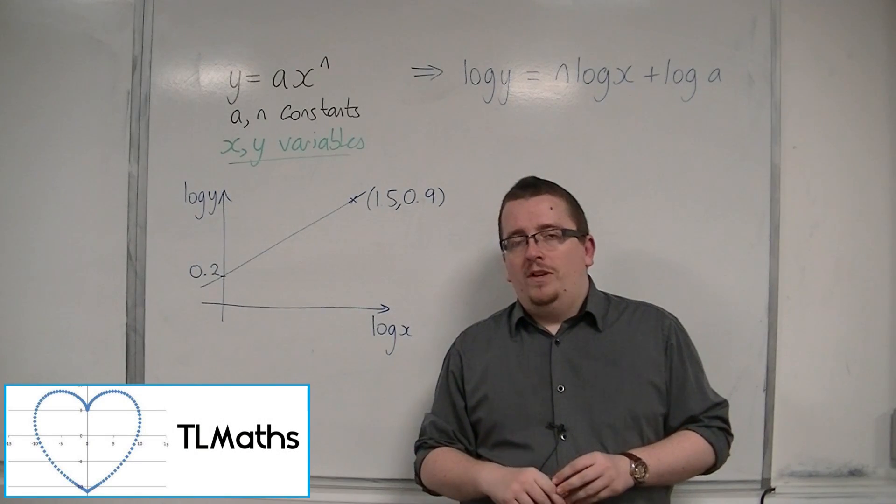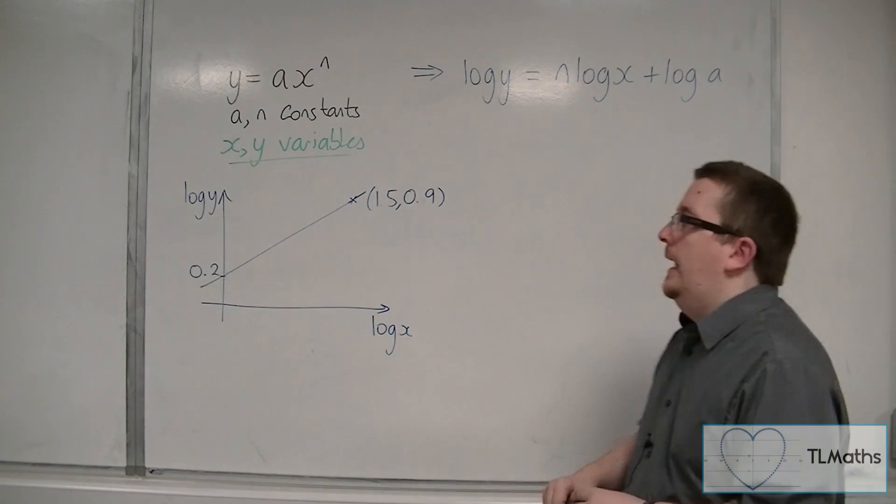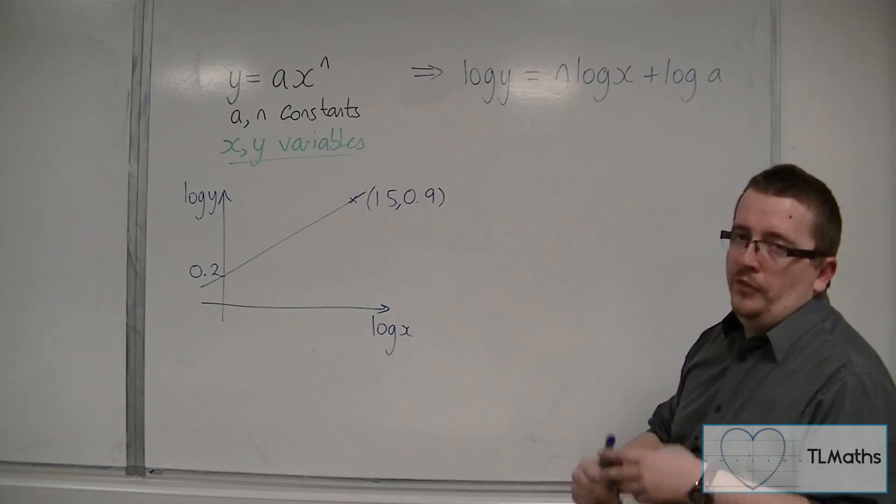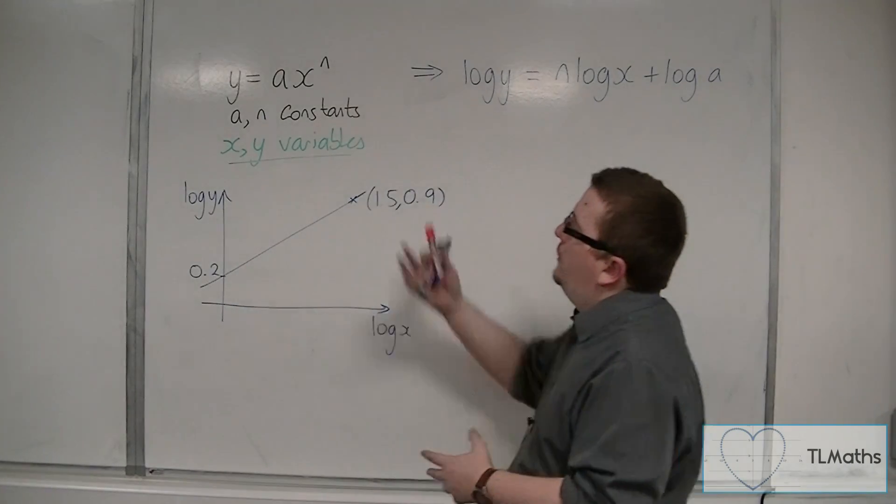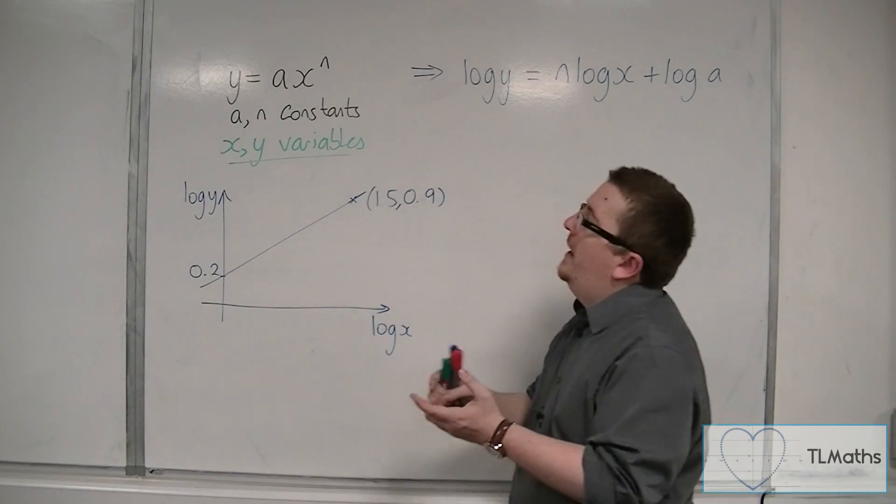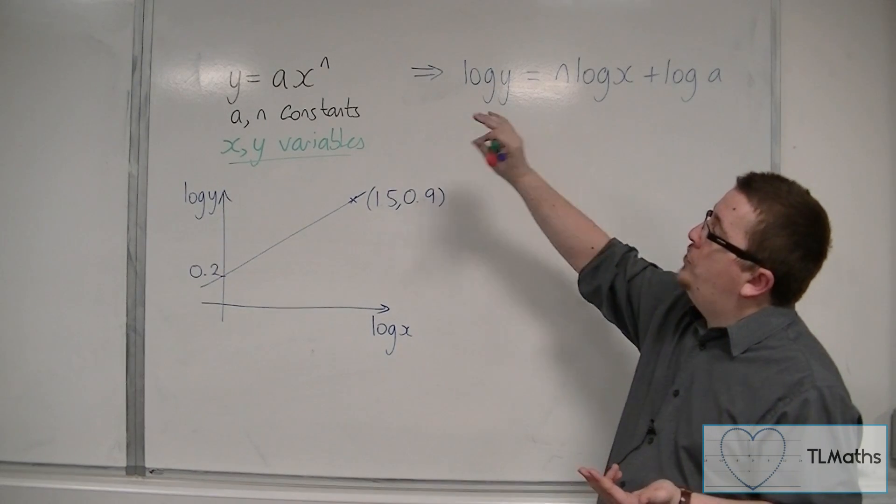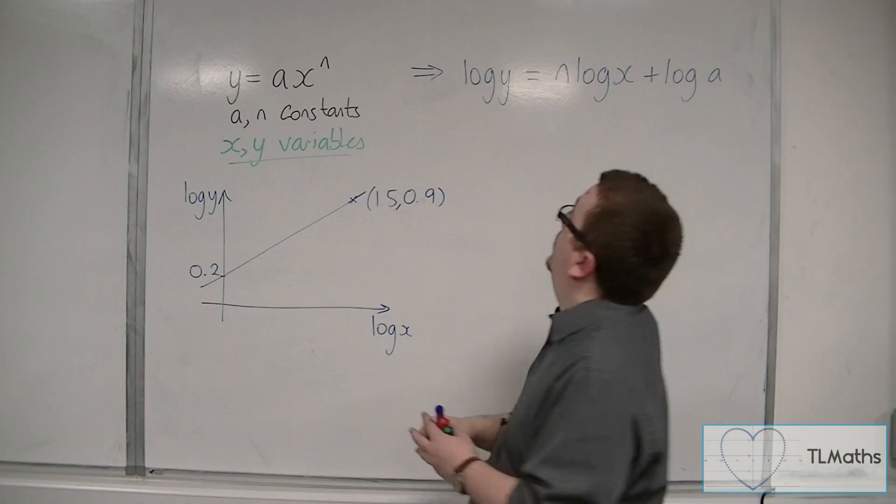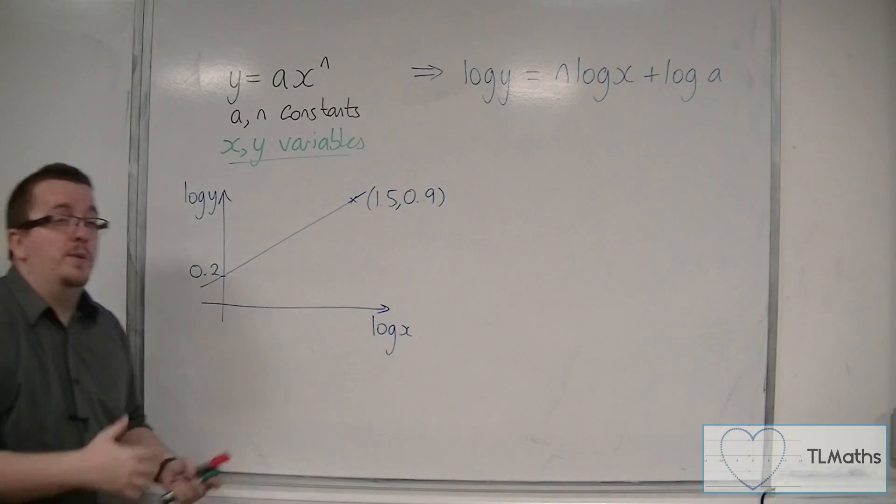So in the previous video, we've looked at reducing an equation to linear form, and I've explained some of the process that's going on behind this. So let's say I've got y is equal to ax to the n, we know that a and n are constants, x and y are variables, and I've reduced it to log y is equal to n log x plus log a. So that's the process that we went through in the previous video.